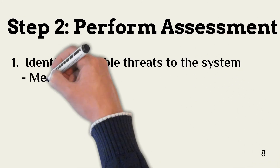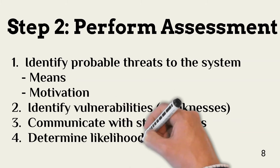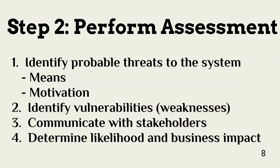Step two is to perform the assessment. Activities in this step include identifying threats and their motives and capabilities, or means. The second activity is to identify vulnerabilities. Once this is done, the assessor may communicate results to management — especially if a critical vulnerability is discovered that needs immediate attention. Finally, the assessor determines the likelihood that one or more threats may successfully attack the risk target and the resulting business impact. These activities are represented sequentially, but this process is often cyclical.